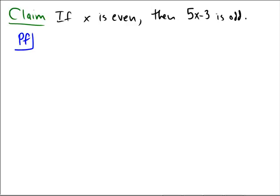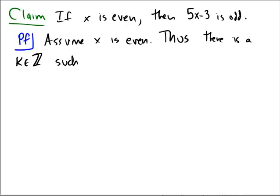Proof. Step one, assume that x is even. Thus, what does it mean to be even? There is a k from the integers such that we have that x is equal to 2 times k.